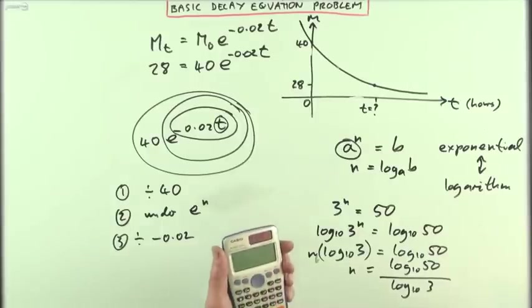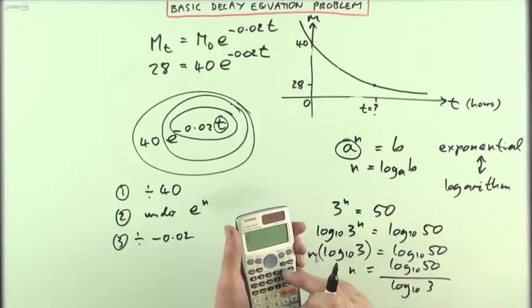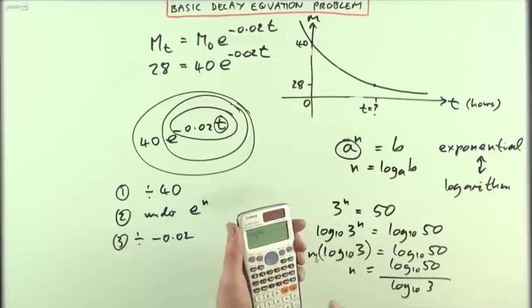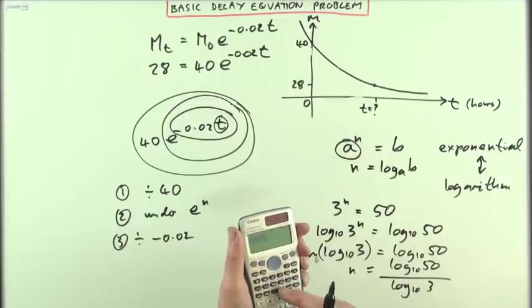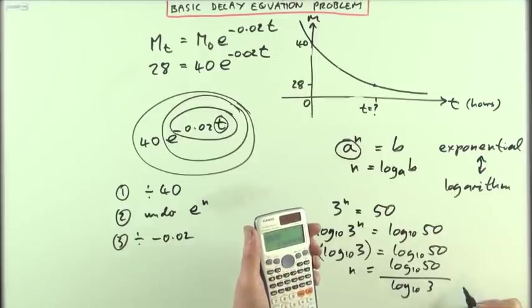Press those buttons on the calculator using the fraction button if you like. I've got log base 10 of 50, just be careful with all the brackets so you get a syntax error, over log base 10 of 3. I'm going to close that bracket and take it out of the way. And you get the same answer, 3.56.